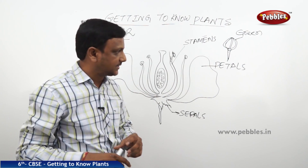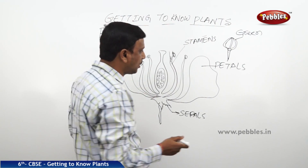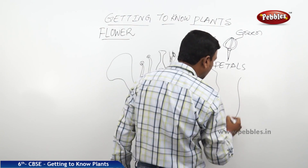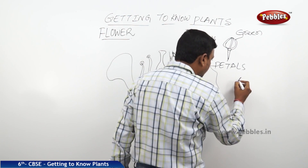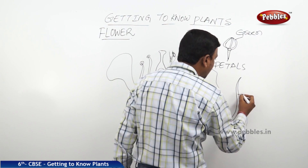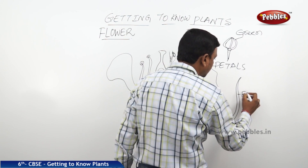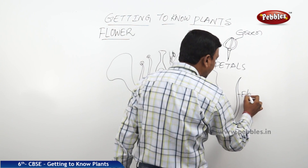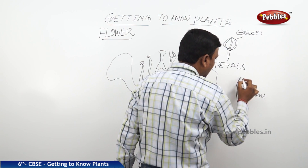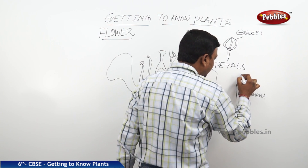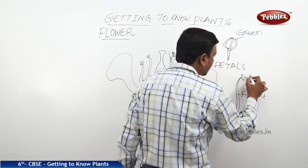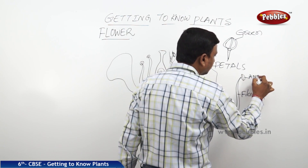Each stamen is made up of two parts. Let me draw this here. This is the filament part of the stamen, and above the filament you find the anther.